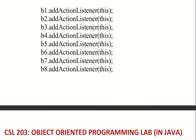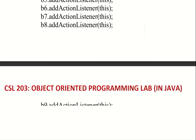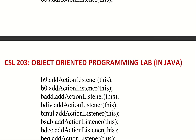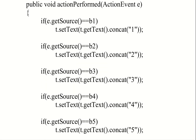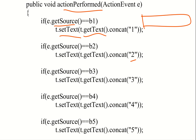When button B1 is pressed, we handle it with actionPerformed. In the actionPerformed method, we check the event: e.getSource(). We check if the source is B1, then we call textField.setText(textField.getText() + '1'). For B2, we similarly call textField.setText with the appropriate value.